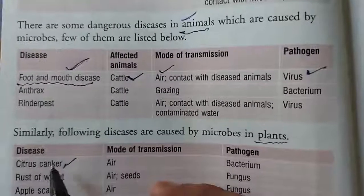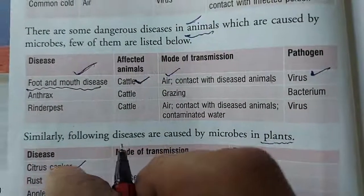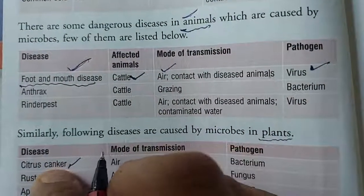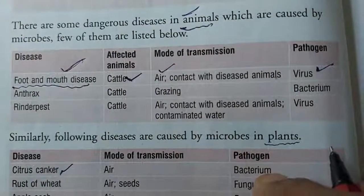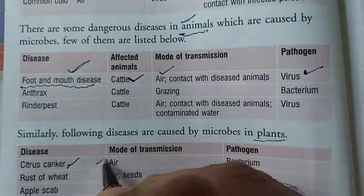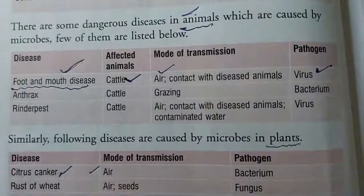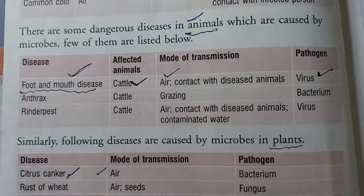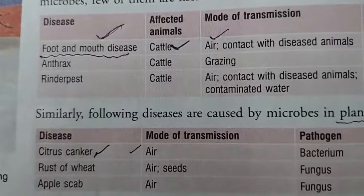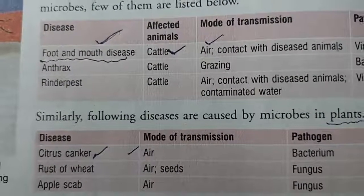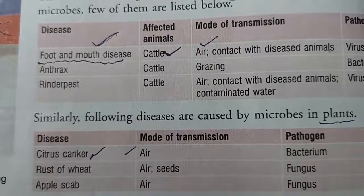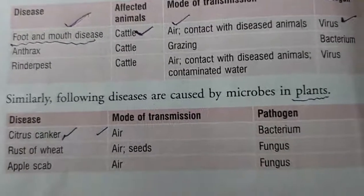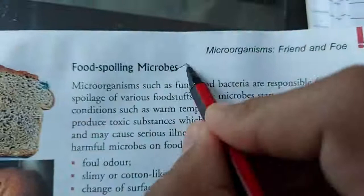The next concept is of plants. In plants, citrus canker attacks on various plants and it is caused by a bacteria. It is transmitted by the mode of air. The name of the disease is citrus canker, caused by bacteria, and it takes place in plants.